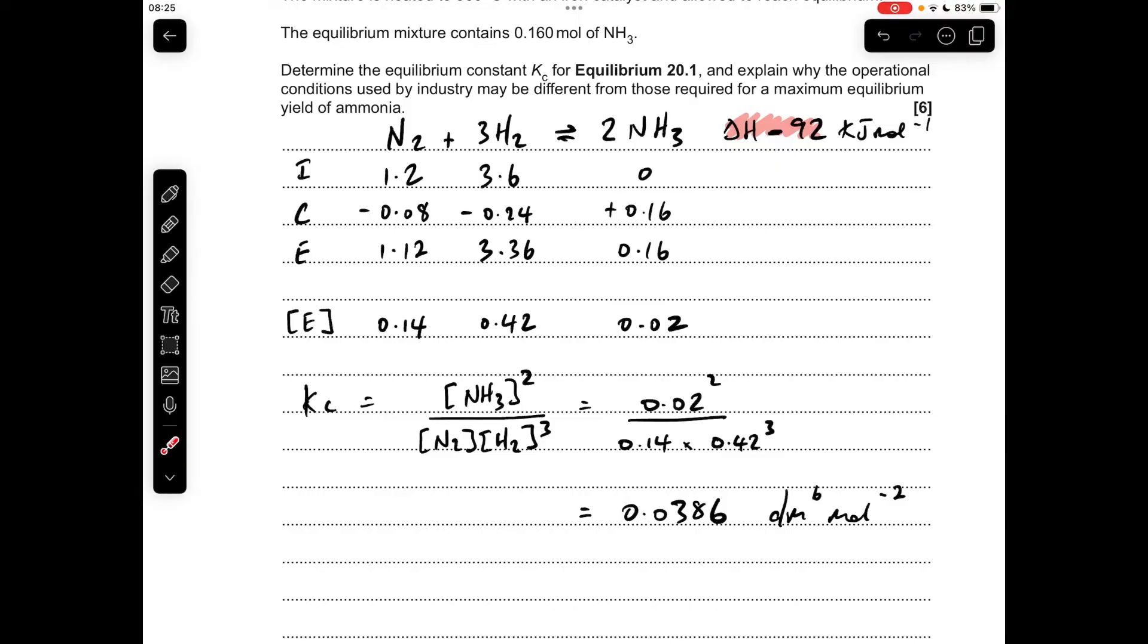Starting with temperature, the forward reaction is exothermic, that minus sign there for the delta H. So a low temperature would promote the forward reaction and give a high yield of ammonia.